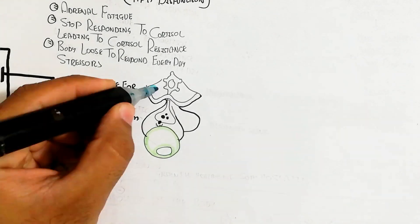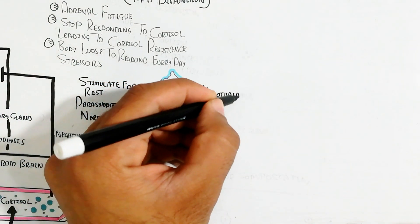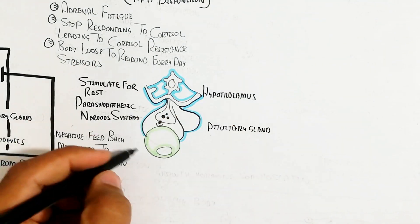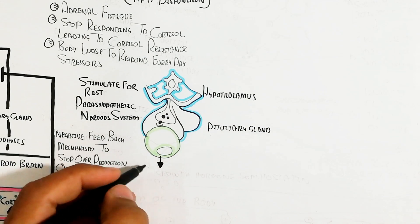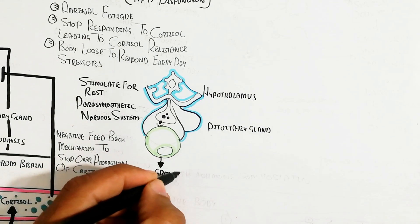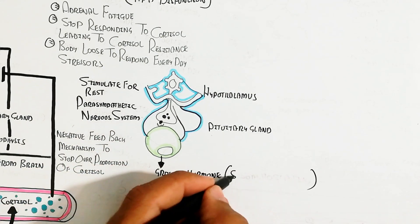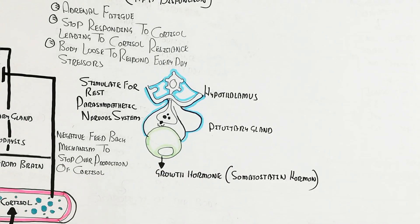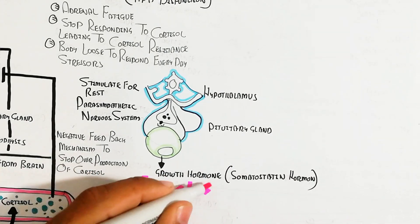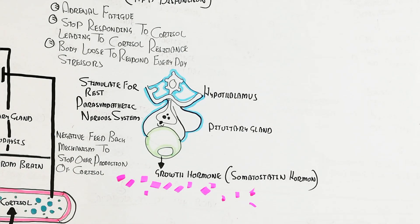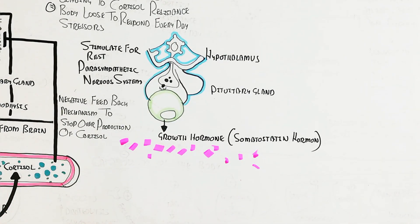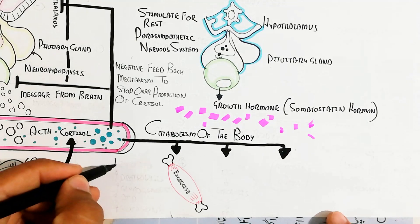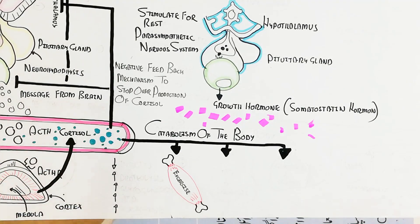The opposite of the stress response is the rest response. Relaxation and sleep produce parasympathetic nervous system activation, which signals the hypothalamus to the pituitary gland adenohypophysis to release growth hormone, also called somatotropin. This growth hormone inhibits catabolism, while cortisol triggers catabolism. Growth hormone instead increases anabolism.